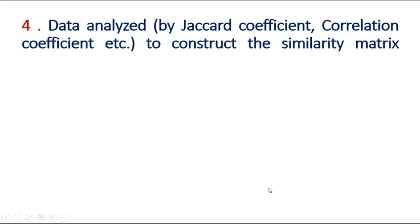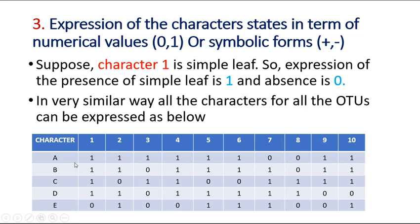Looking at the previous slide and comparing OTU A and B: for character 1, both have the same value 1,1 — so it is common. Character 2 is also common: 1,1. Character 3 is 1,0 — not common. Character 4 is 1,1 — common. Characters 5, 6, 8, 9, and 10 are also common. So for A and B, the number of characters in common is 8 out of 10 total characters.